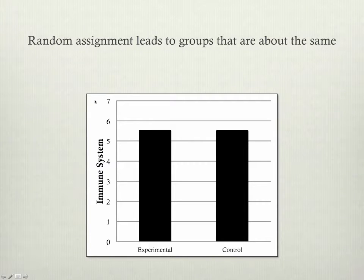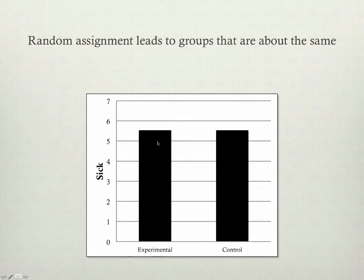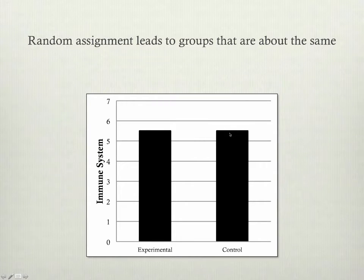But the nice thing with random assignment is not only are the groups the same in terms of how sick they are, but because they were randomly assigned, we can know without even checking that they're going to be about the same in terms of the average quality of their immune system.